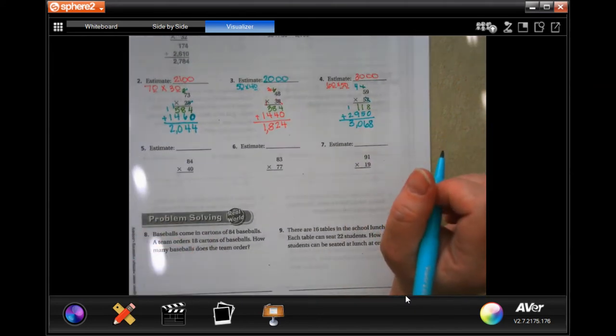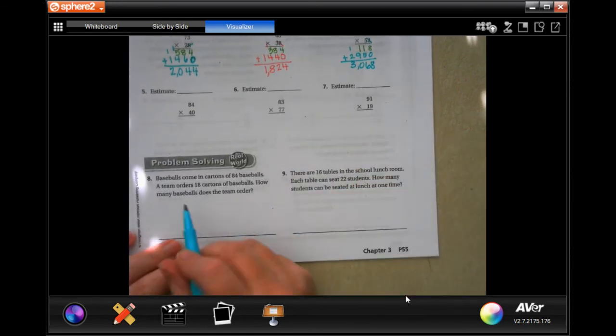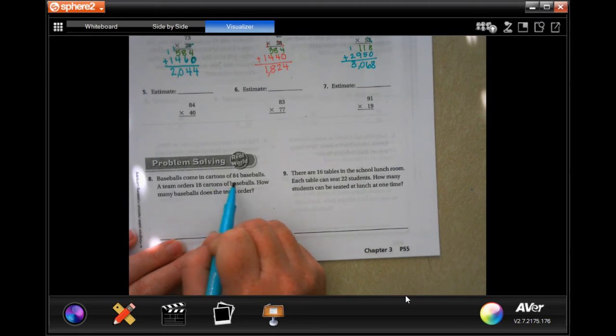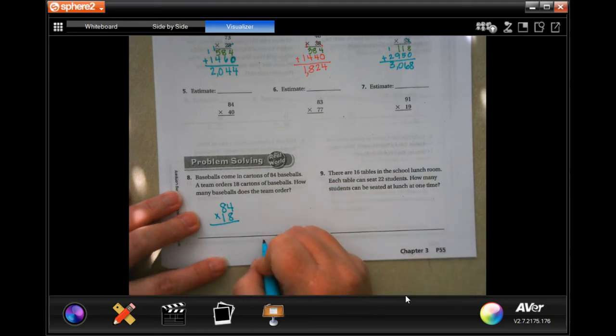You guys are going to do 5, 6, 7. We are going to come down to where it says baseballs come in cartons of 84 baseballs. The team orders 18 cartons of baseballs. How many baseballs does the team order? So 84 times 18, and whatever our answer is, it's going to be in baseballs.